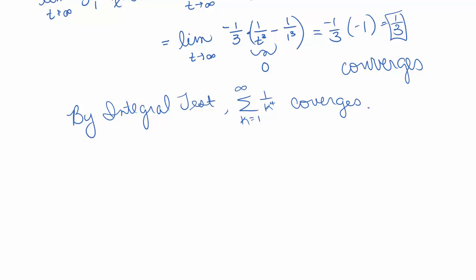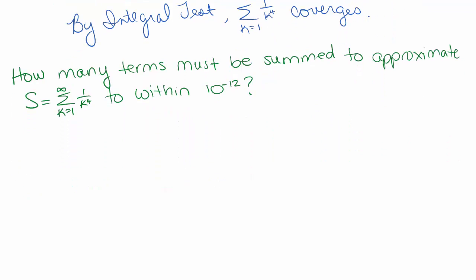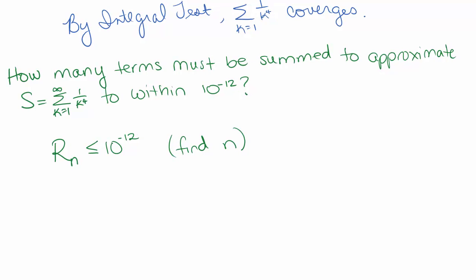Now that we know the series converges, the new question is: how many terms must be summed to approximate the sum of our series to within 10 to the negative 12th? This means we want the remainder to be less than or equal to 10 to the negative 12th, and we want to find the n that will do this. Because if the tail of the series is less than or equal to 10 to the negative 12th, then adding that much more on can't change the sum of the series by more than 10 to the negative 12th.